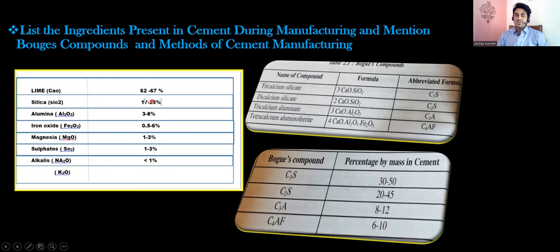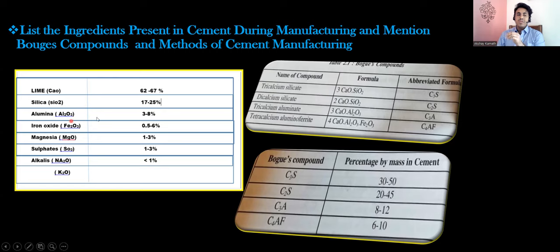You don't have to remember everything, but the first two try to remember. Lime will be added in 62 to 67 percent — you can say 65 percent, no issues. Silica you can say 17 to 25, even 20 to 22 percent. Alumina — try to remember 3 to 8 percent. Rest all things, a minimum amount has to be added.